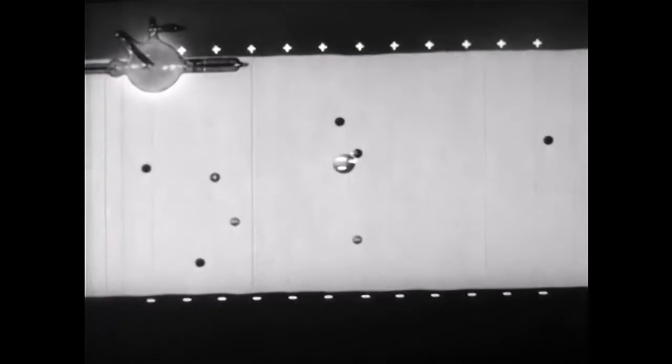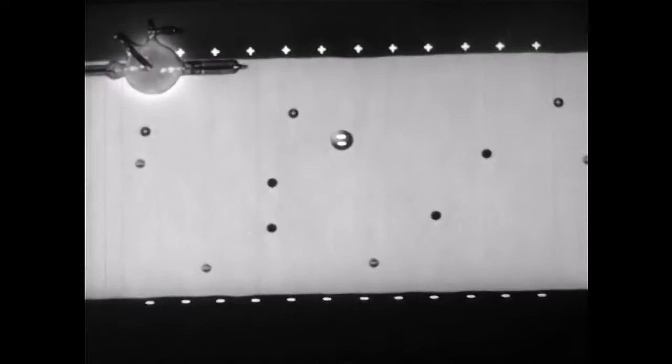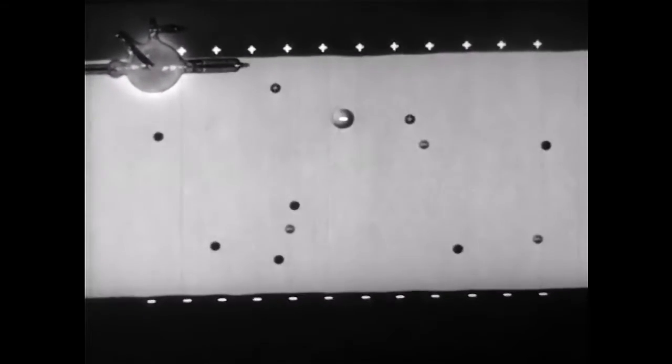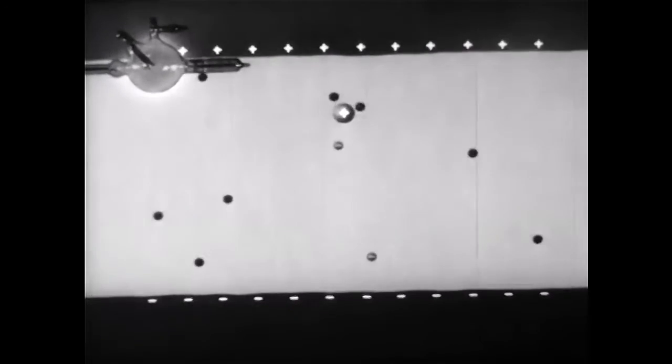The charge on the drop may be changed by ionizing the air with x-rays. If a positive ion collides with a negative drop, the charge on the drop is reduced. The change in charge can be measured by the change in speed. Never during thousands of observations has a charge been discovered which is less than the unit charge on a hydrogen atom found by electrolysis. Oil drops always have exactly this amount of charge or a whole number of such charges.